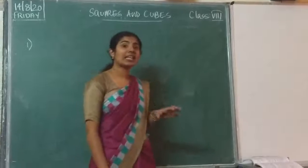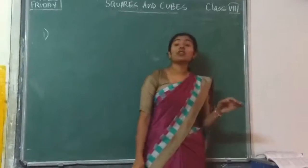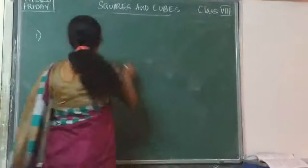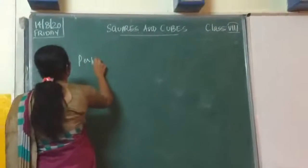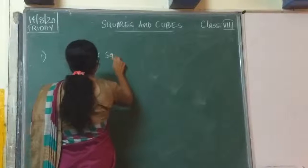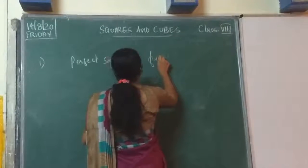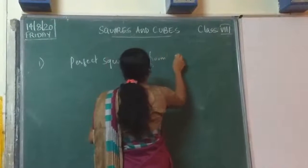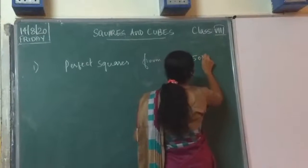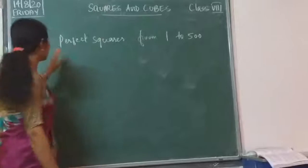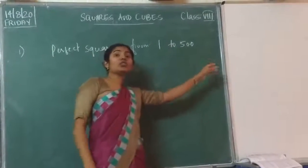The question is: Make a list of all perfect squares from 1 to 500. You should write all perfect squares from 1 to 500.